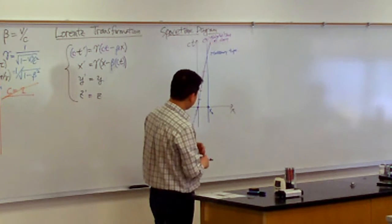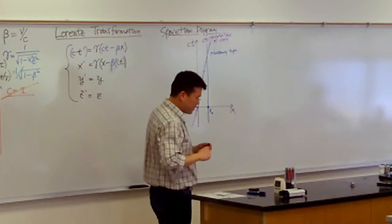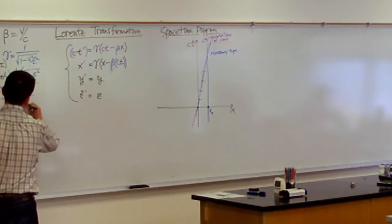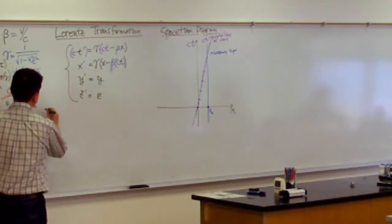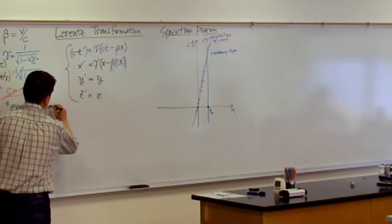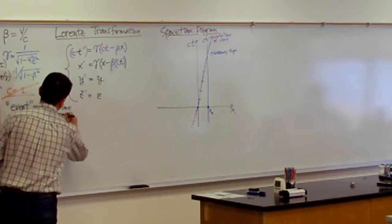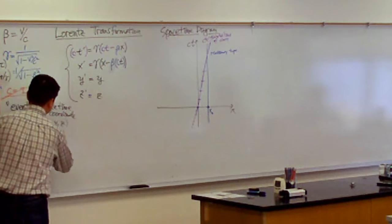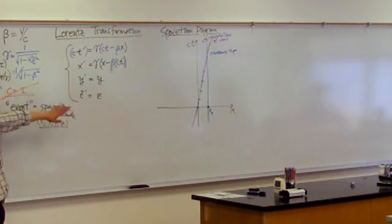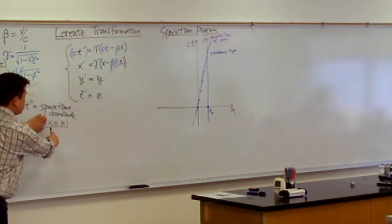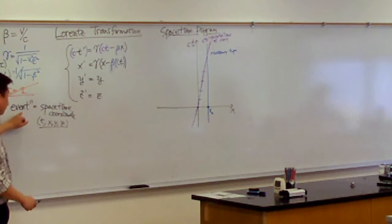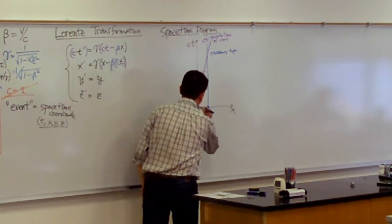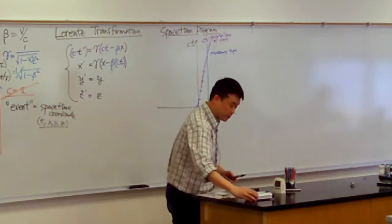So let's define two events. By the way, this is a term I should probably define. When someone says 'event' in the context of special relativity, what we mean is we are trying to define a spacetime coordinate — like T, X, Y, Z. We call it an event rather than just a coordinate or point, because when you say coordinate or point, a lot of people just think spatial coordinate. When we say event, we are being more clear that we are including a specific time.